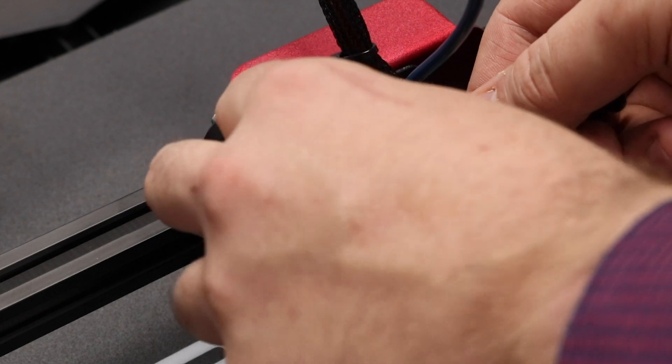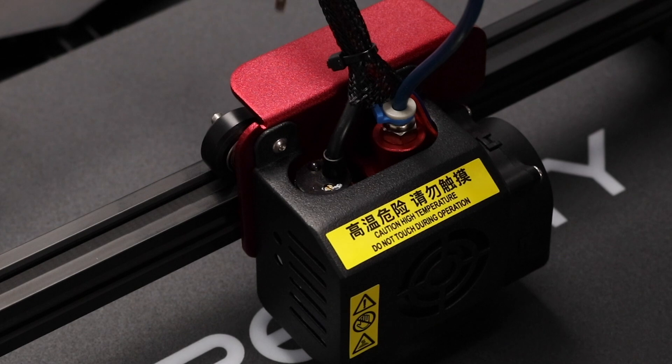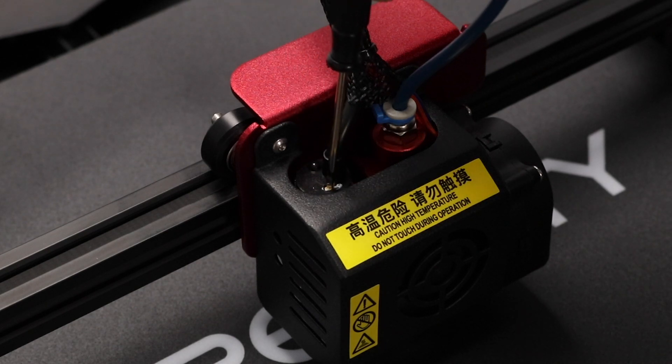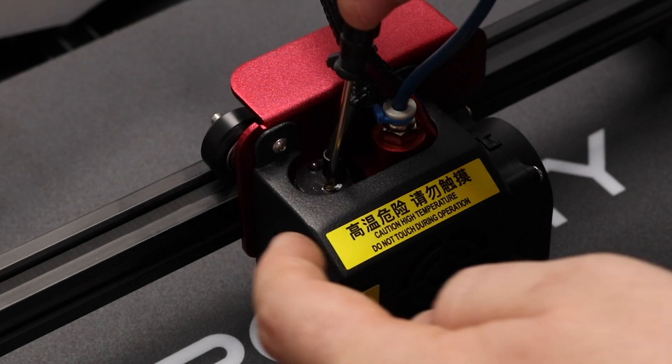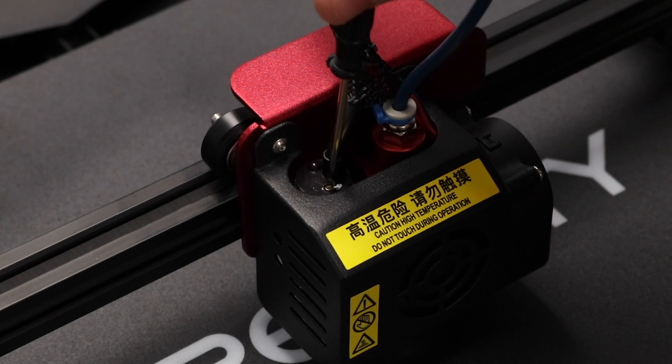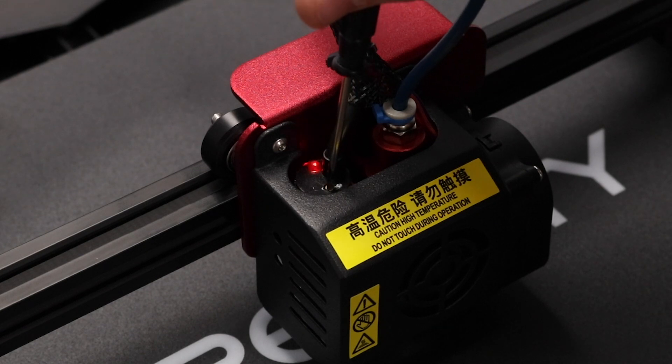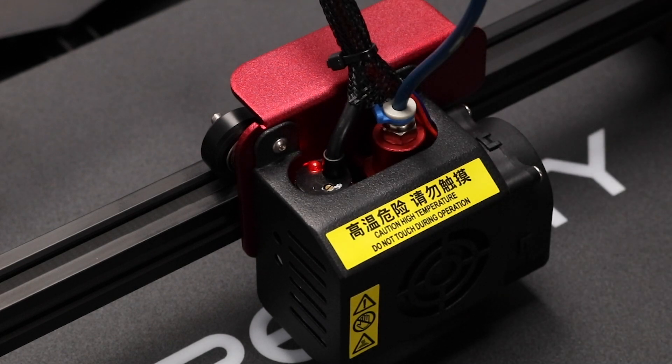Remember a couple steps ago when we gapped our nozzle? That was so that we could set this distance properly. Take your screwdriver, slot it into the screw, and start turning clockwise until you see the LED light up. There. Once you see it light up, turn it back and then turn it forward again until you see it light up again.